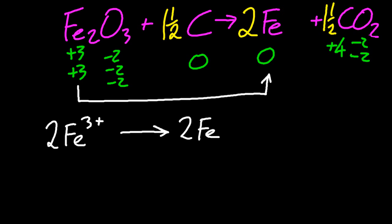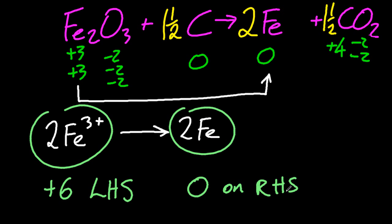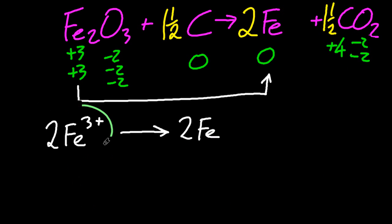And that's unbalanced. The charges are unbalanced here. The left-hand side has a charge of plus six. The right-hand side has no charge. It's not a balanced equation. Each side has to have the same charge. So I'm going to add my six electrons just there. And that is reduction.